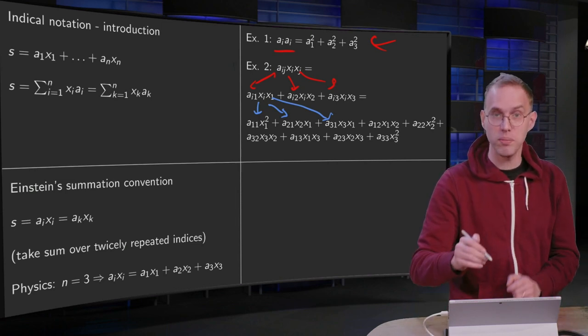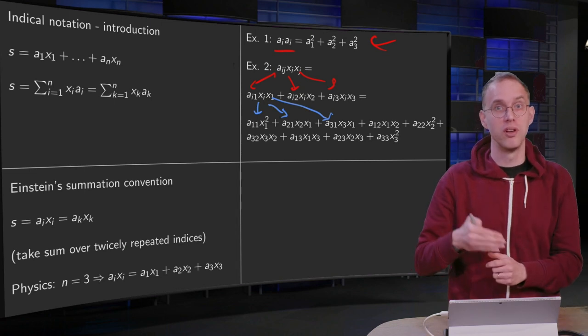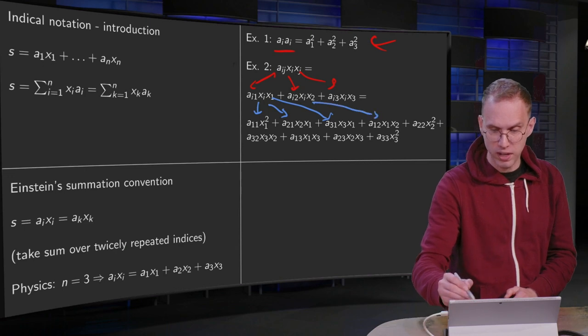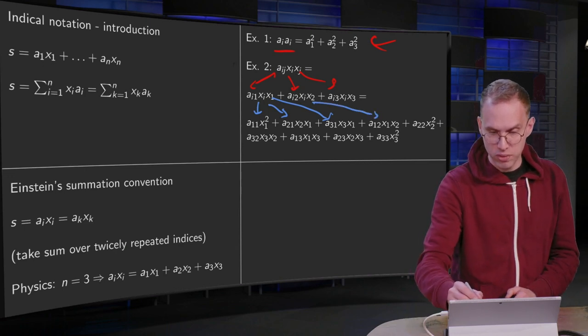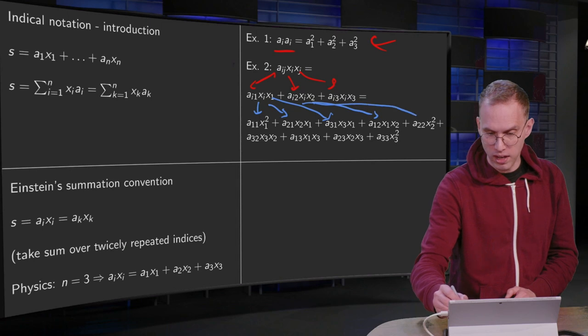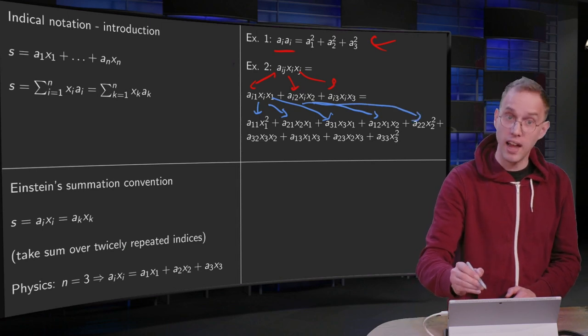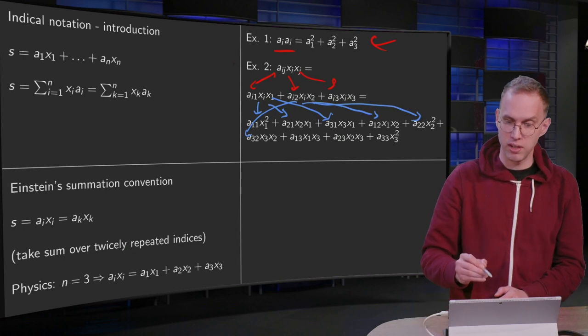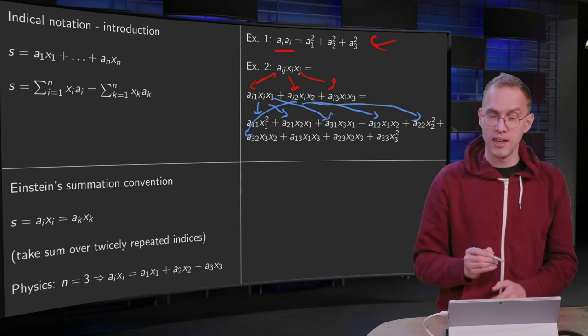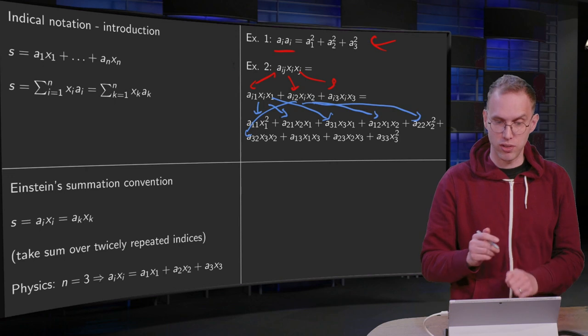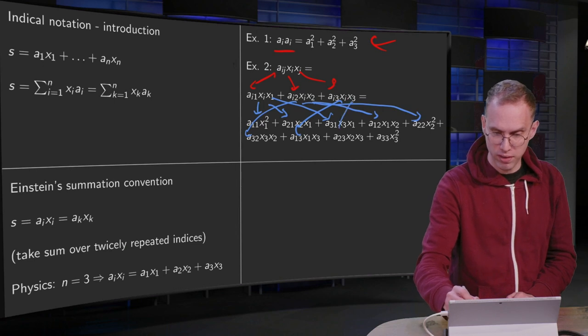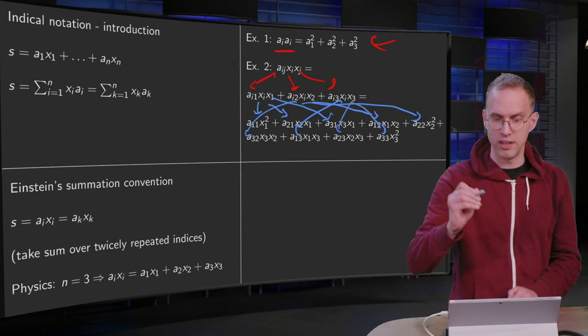Then the second term, i again has to be summed from 1 to 3, so we get for i equals 1, a₁₂x₁x₂, i equals 2 gives us a₂₂x₂x₂, and i equals 3 gives us a₃₂x₃x₂. End of the second term. And then the third one, a₁₃ for i equals 1, for i equals 2 and i equals 3.